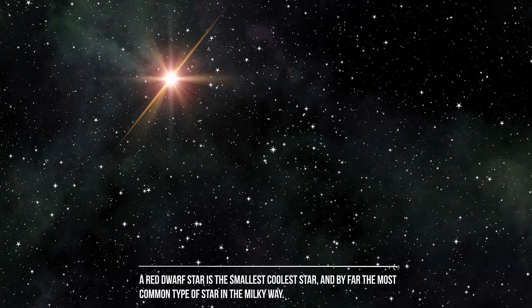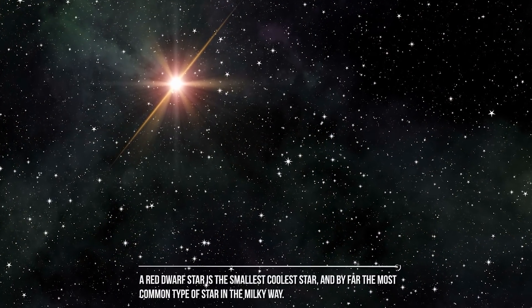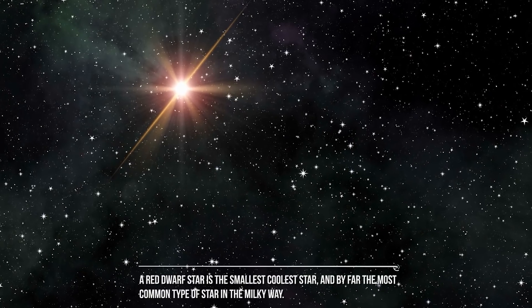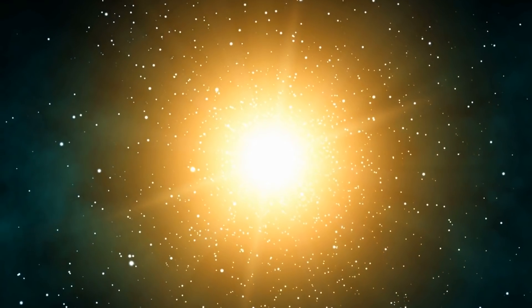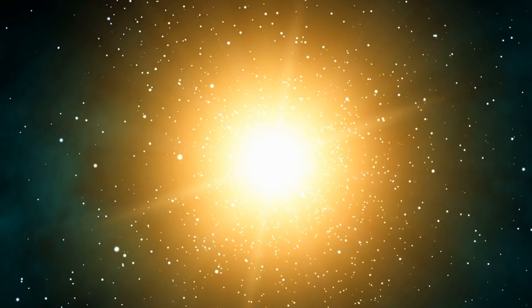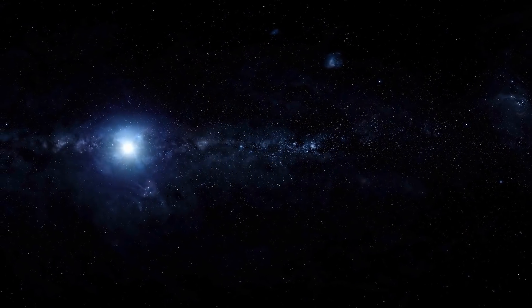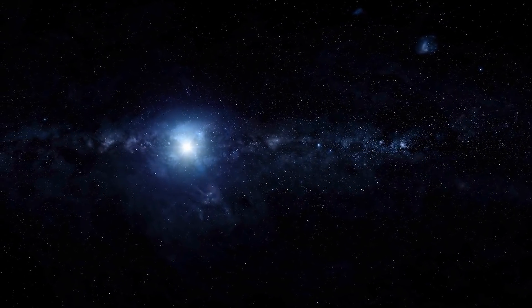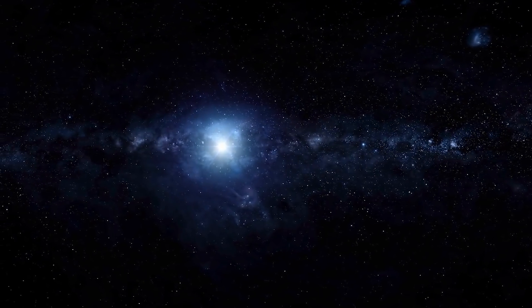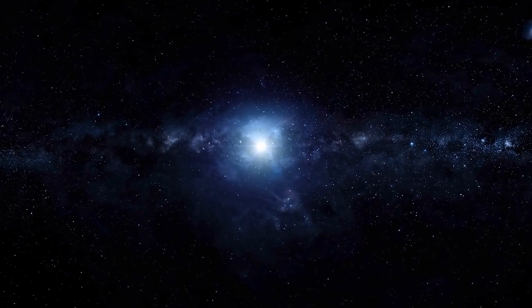But what's a red dwarf star? A red dwarf star is the smallest, coolest star and by far the most common type of star in the Milky Way. According to Kepler's data, astronomers estimate that 6% of red dwarf stars have an Earth-sized planet in the Goldilocks zone. This means that life could exist in more places than we currently think. This gives us a huge boost in the finding of life. Who knows, maybe in the next decades, Kepler's successors will finally prove that we are not alone in the universe.